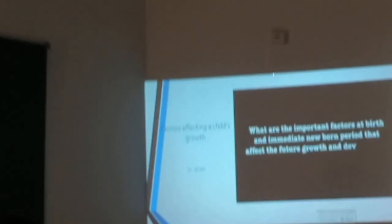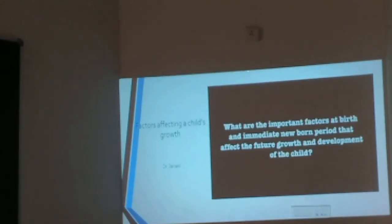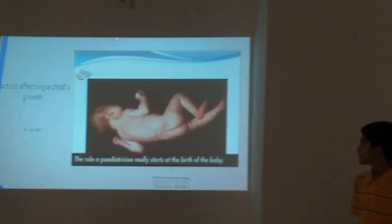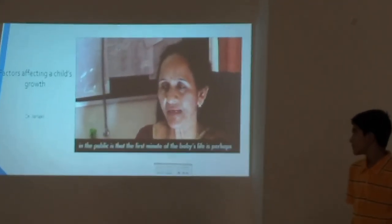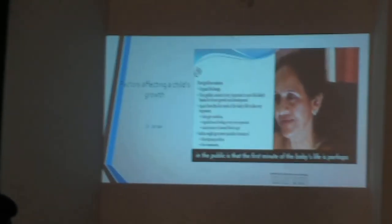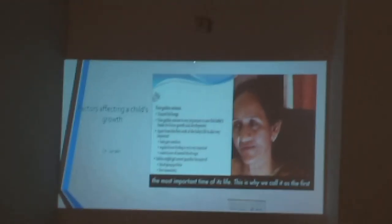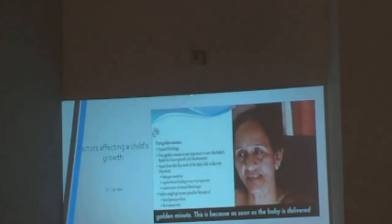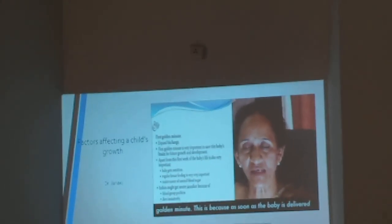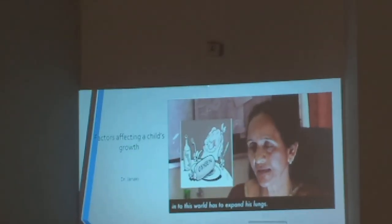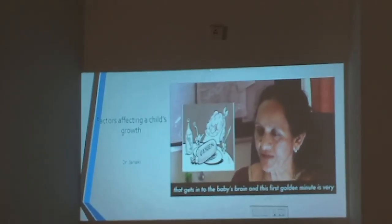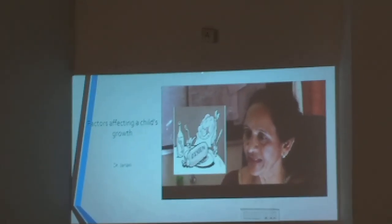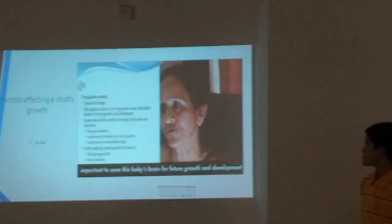What are the important factors of birth and the immediate newborn period that affect the future growth and development of the child? The role of a paediatrician really starts at the birth of the baby. I would like to emphasize to all parents and the public that the first minute of the baby's life is perhaps the most important time in his life. This is why we call it the first golden minute. As soon as a baby is delivered, he has to expand his lungs. Once his lungs are expanded, a lot of oxygen gets into the baby's brain. This first golden minute is very important to save the baby's brain for future growth and development.